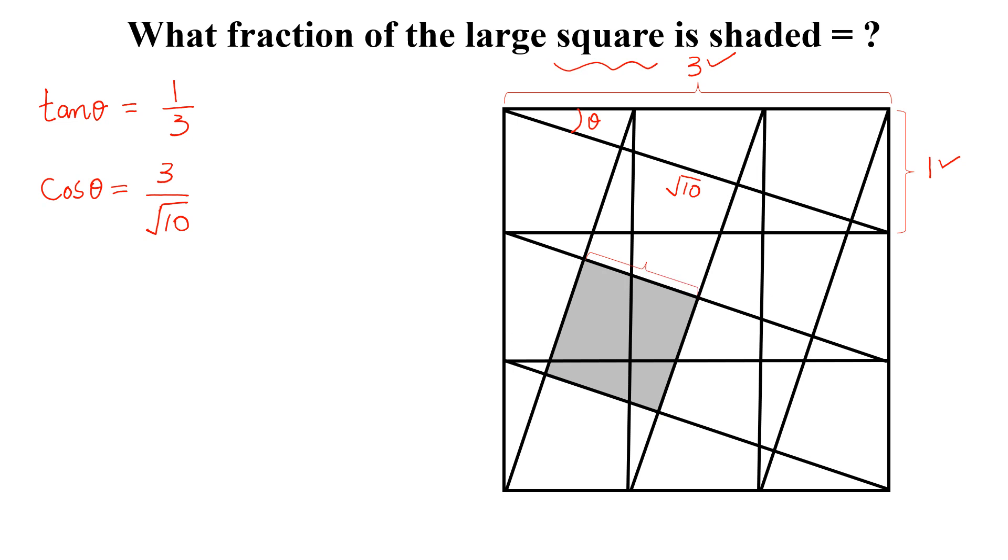Now let the side of this shaded square is A, then this length parallel to this will be also equal to A and this is the right angle triangle. Let this angle will be also theta and the side of this small square is 1. So from the small triangle, we can write cos theta equal to A divided by 1.